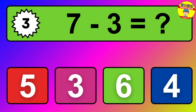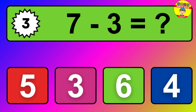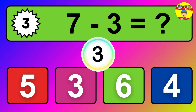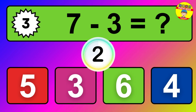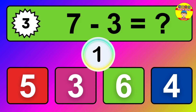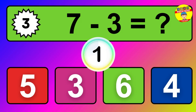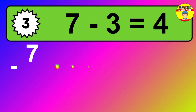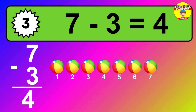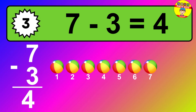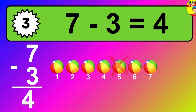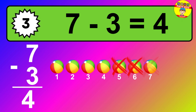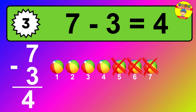Question three: seven minus three equals what? So the answer is seven minus three is four. Let's count it: one, two, three, four.